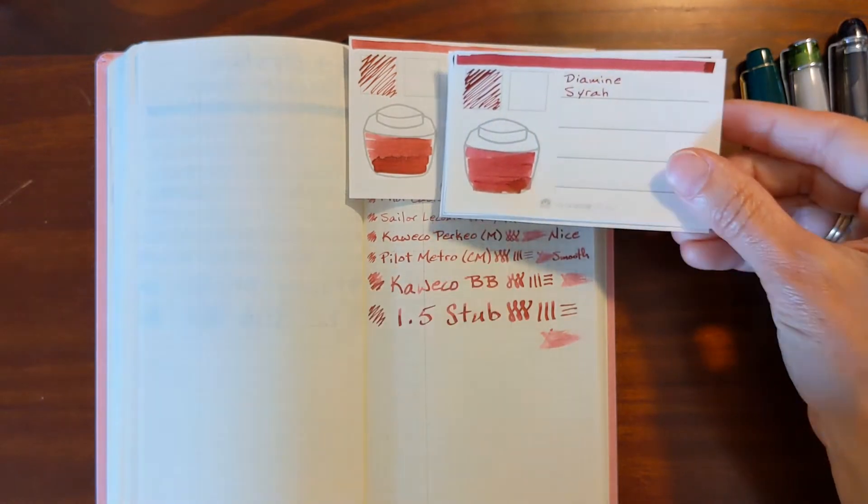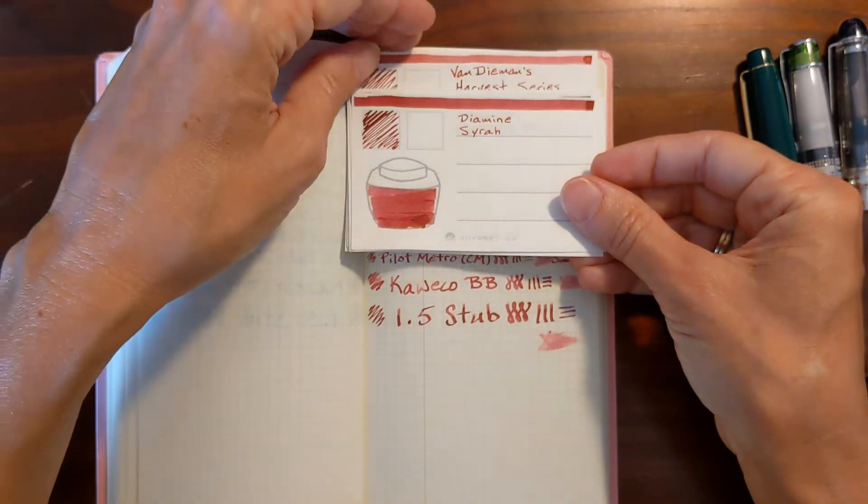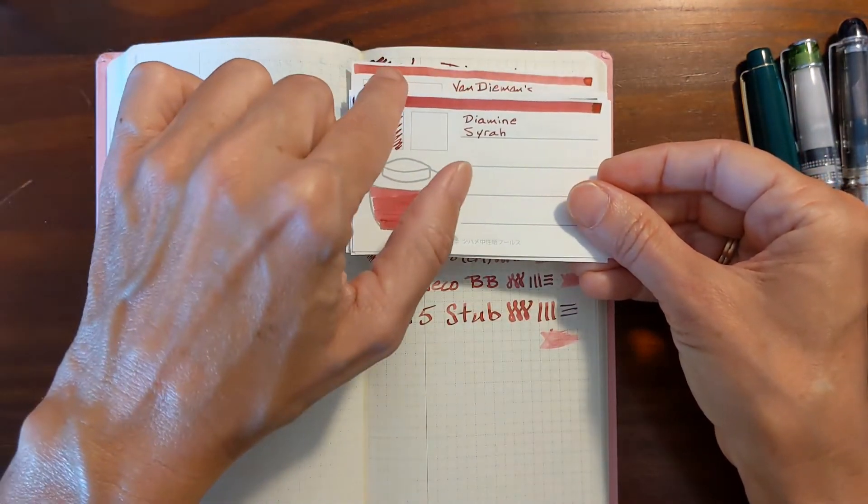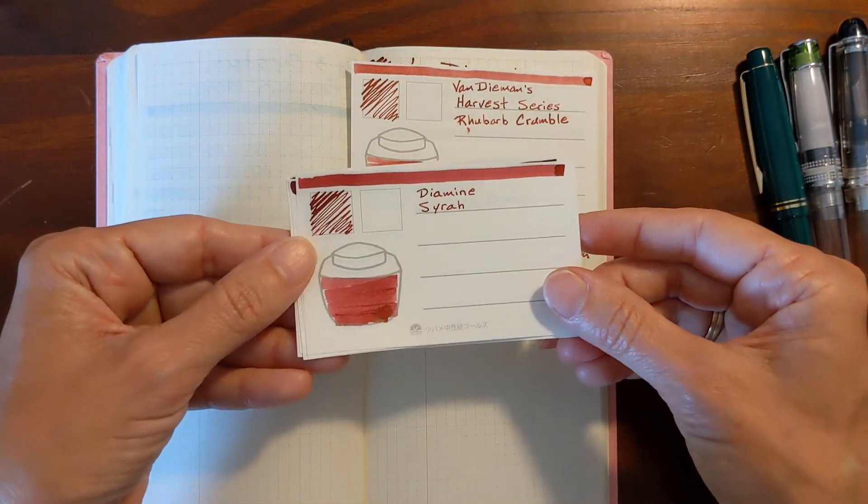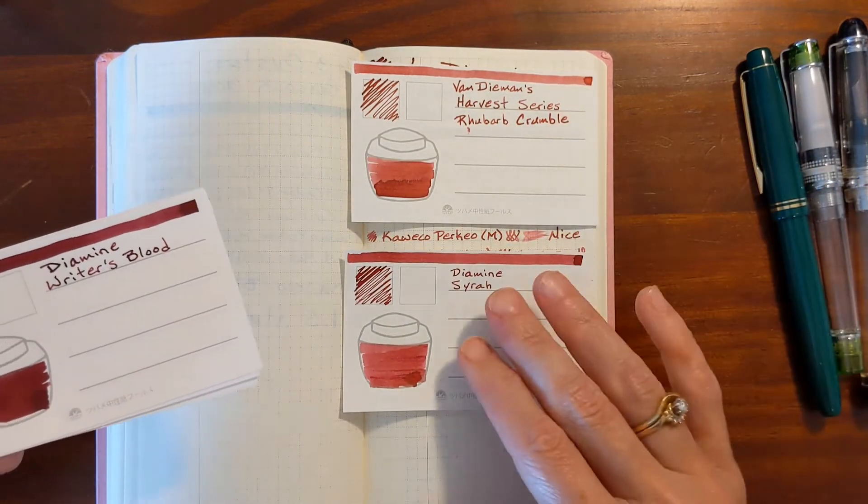Diamine Cerise is similar. It's a little, oh, it is very similar. If they're not right beside each other, it would be hard to tell the difference. You can see from the swatch, Rhubarb Crumble comes across a little lighter.